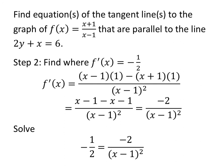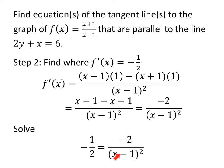So let's find the derivative. f prime of x is low — x minus 1 — times d high — 1 — minus high — x plus 1 — times d low — 1 — all over low squared. Distributing: x minus 1 times 1 is x minus 1, minus parentheses x plus 1 gives minus x and minus 1. The x's cancel out, giving negative 1 minus 1, which is negative 2, over x minus 1 all squared. Now I need to find where the derivative equals negative one half.